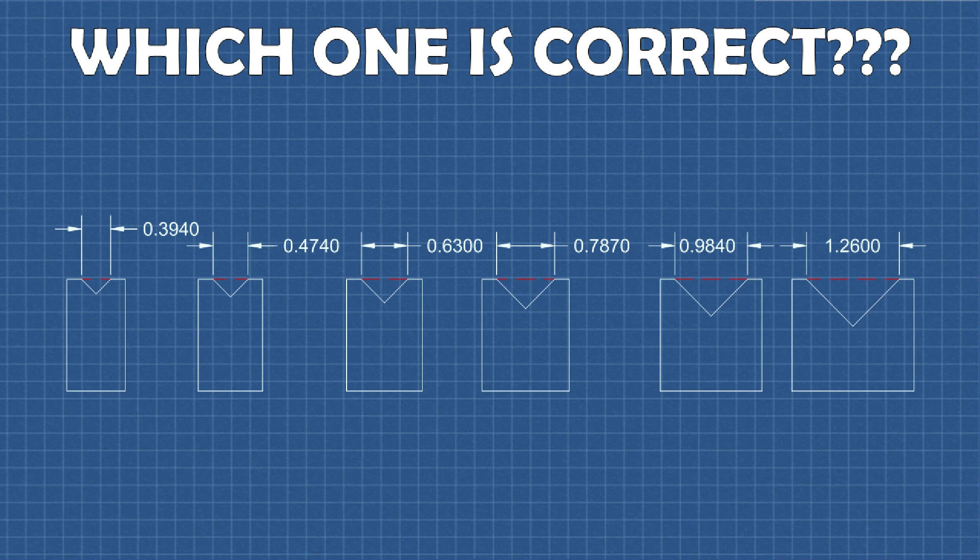For this reason it is important to have a standardized method for v-size selection. Many are guided by rules of thumb, tribal knowledge, or gut feelings. As we know, these can be dangerous in that they may produce inaccurate or, more importantly, varying results from operator to operator. Luckily there is a way to determine the optimal v-size given a few key parameters.